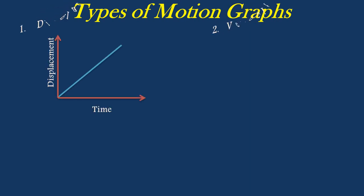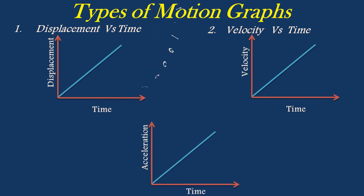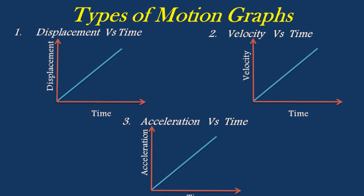Now let's understand various types of motion graphs. There are mainly three types of motion graphs: 1. Displacement-time graph, 2. Velocity-time graph, 3. Acceleration-time graph. At this stage, we mainly consider displacement and velocity graphs.